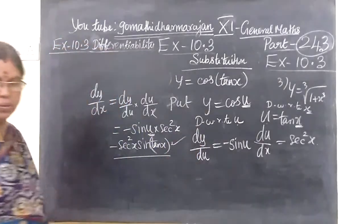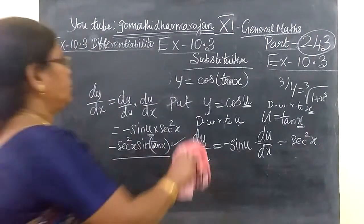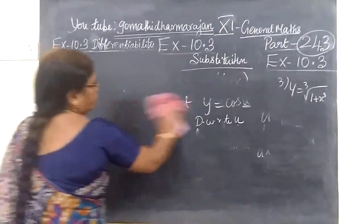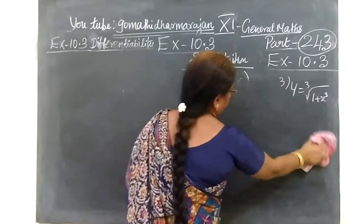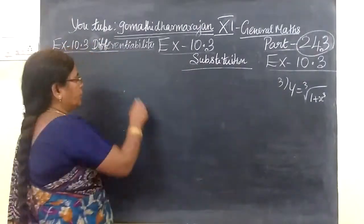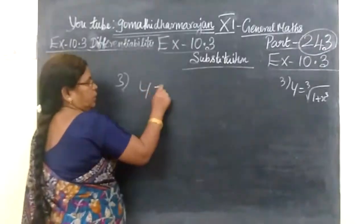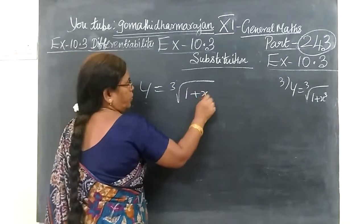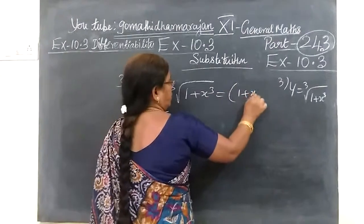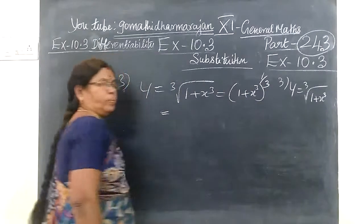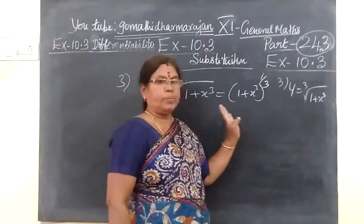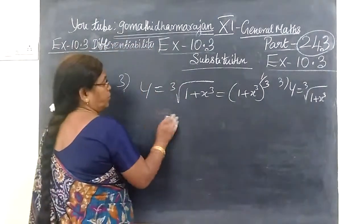So this one is the correct answer. Coming to the next question. The last one is the third question — the square root of the integration. Let me write y equal to the cube root of 1 plus x squared. This is 1 plus x squared, whole power 1 by 3.